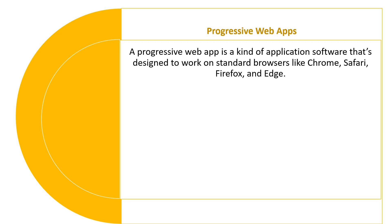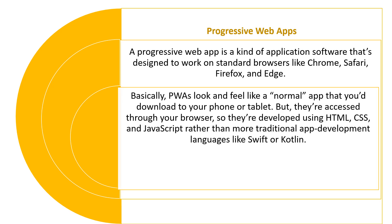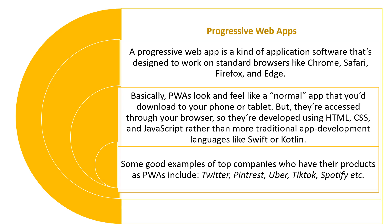The last type is progressive web apps. These are application software designed to work on standard browsers like Chrome, Safari, Firefox, and Edge. Progressive web apps feel like a normal app that you download on your phone or tablet, but they are accessed using only a browser. They are developed using HTML, CSS, and JavaScript rather than traditional app development languages like Swift and Kotlin. Top companies with PWAs include Twitter, Pinterest, Uber, and TikTok.